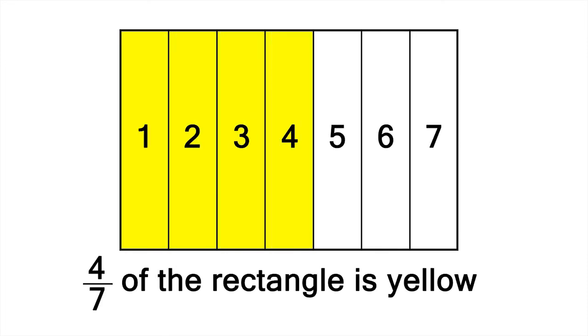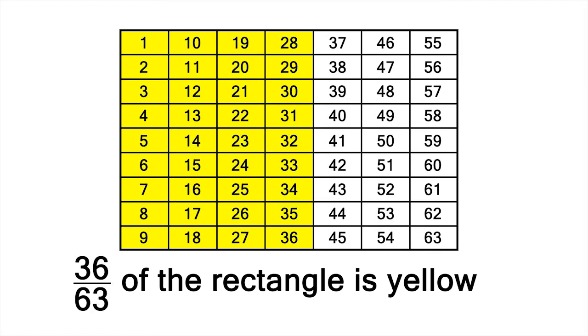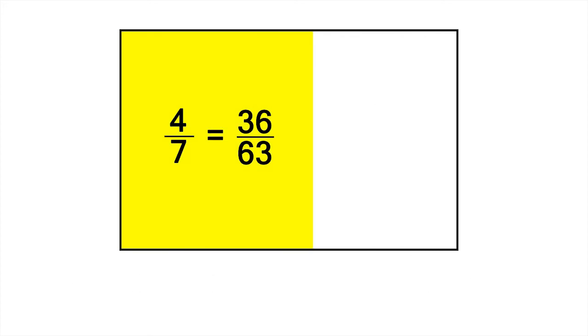Another way to see this is using a diagram. Let's divide a rectangle up into sevenths, and colour 4 sevenths of the rectangle yellow. Now let's see what 36 sixty-thirds looks like. The relative amount of yellow hasn't changed. So, 4 sevenths has the same value as, or is equivalent to, 36 sixty-thirds.